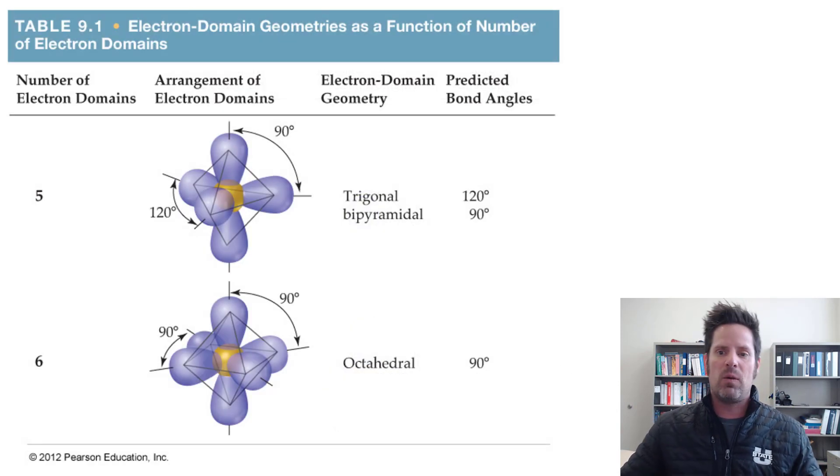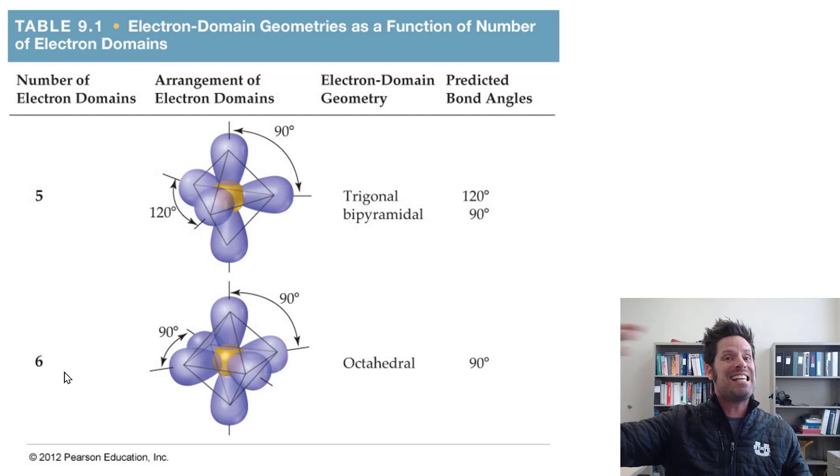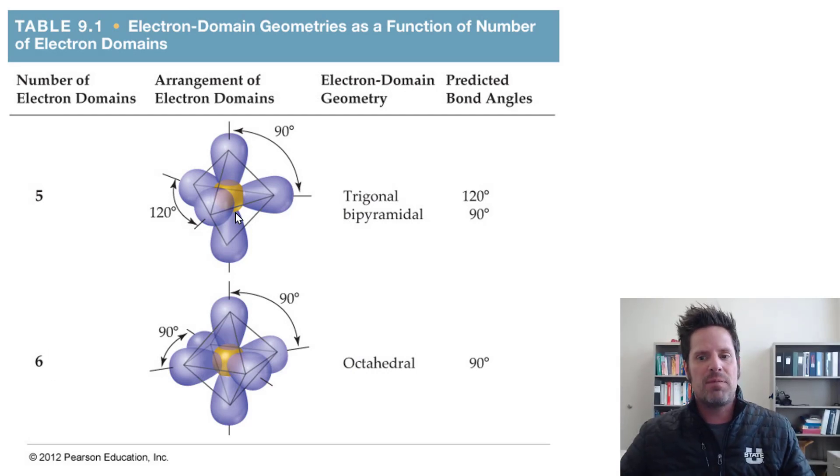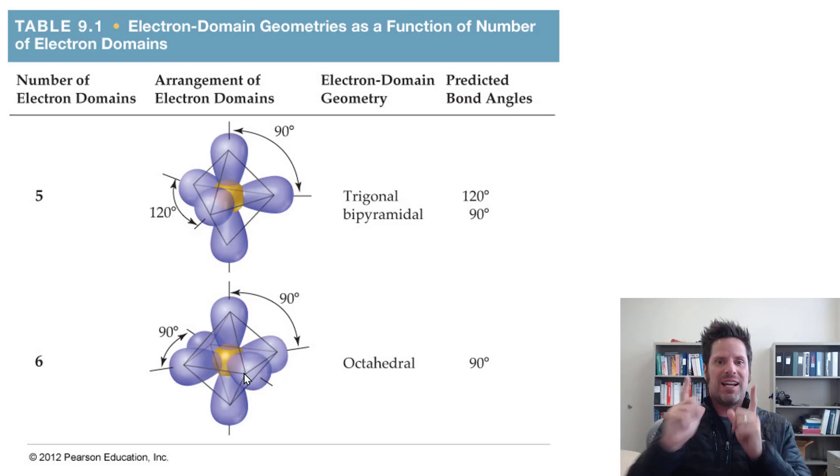Continuing table 9.1 from our text though, you can see that as you get larger numbers of electron domains that now exceed an octet around that central atom, you get more exotic geometries. Trigonal bipyramid right here with bond angles of 120 between each of the groups around the equator and 90 degrees between the orbitals up top and down bottom and that equator, as well as octahedral that has six surrounding groups all separated by 90 degrees.